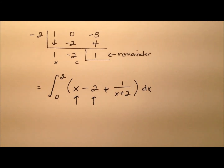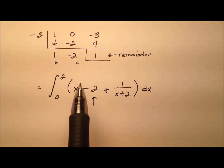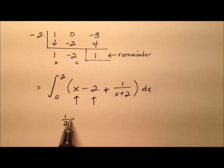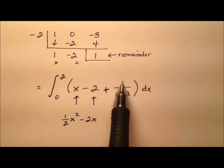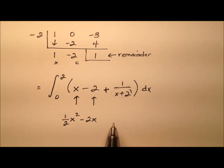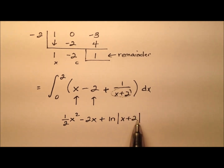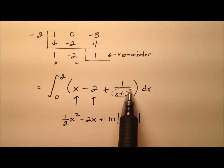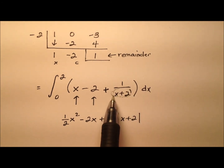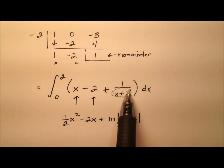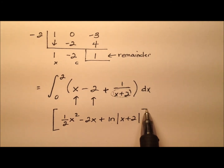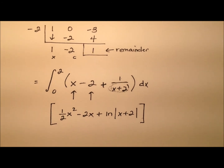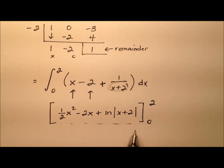A couple of these terms are really easy to integrate. Integrating x gives ½x², and integrating negative 2 gives negative 2x. For the term 1 over x plus 2, this integrates to the natural log of the absolute value of x plus 2, because the derivative of x plus 2 is just 1. If you were to use a u-substitution, you'd arrive at the same result. We're not adding a plus C because we have a definite integral with limits of integration from 0 to 2.